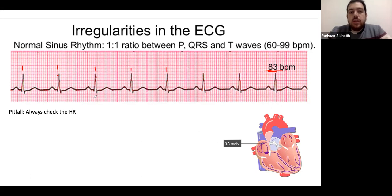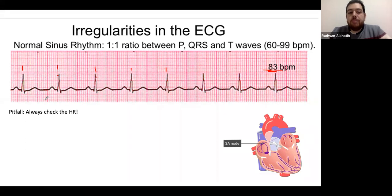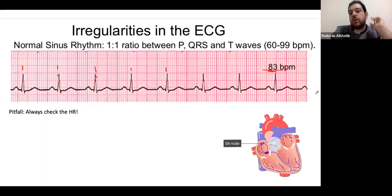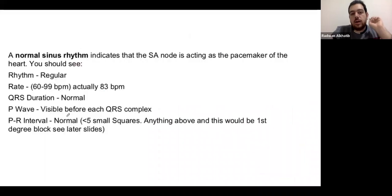Important: when you see a perfect P-QRS-T repeating pattern, don't call it normal sinus rhythm before checking the heart rate. Following the methodology every time prevents such mistakes. A normal sinus rhythm: each P wave is followed by a QRS, then a T wave; all PR, QRS, and QT intervals are normal; and the heart rate is between 60 and 99.